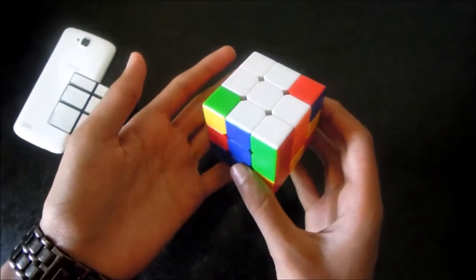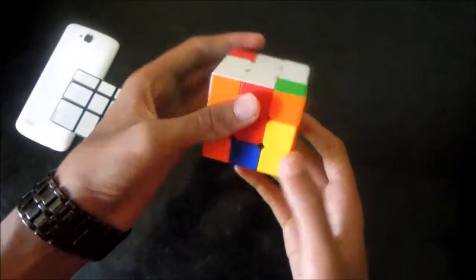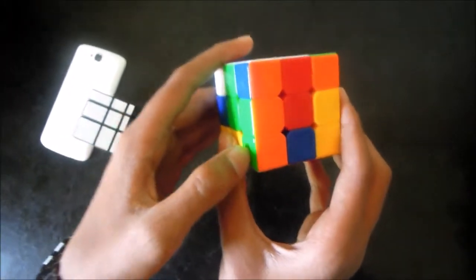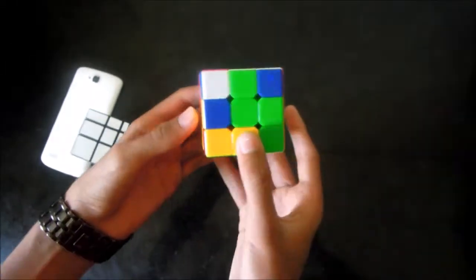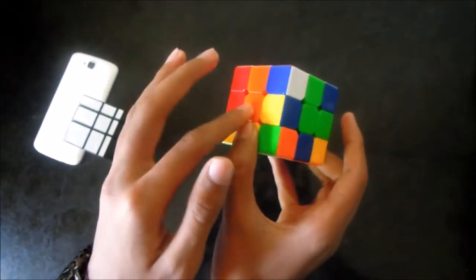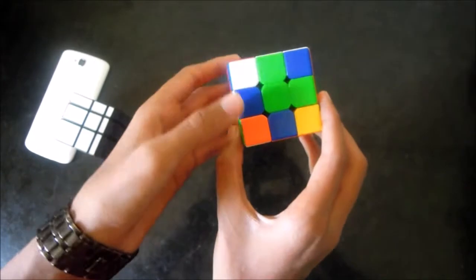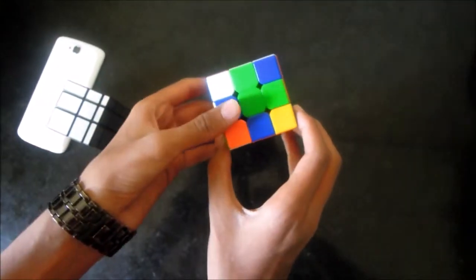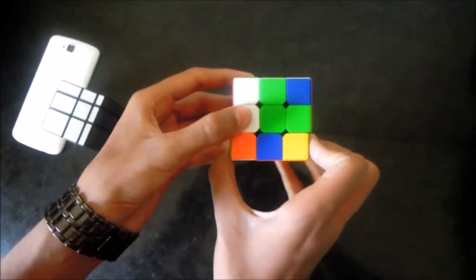So now we are going to place edges at their position. I mean corners. So here is one corner. It is white, green and orange. So we have to place it between white, green and orange. It's here. White, green and orange. Now it is at left. So we will move it towards the right. At the opposite direction. Take it down. And place it back.